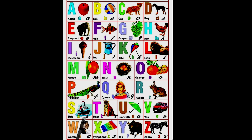S for sheep, T for tiger, U for umbrella, V for van, W for watch, X for xylophone, Y for yak, Z for zebra.